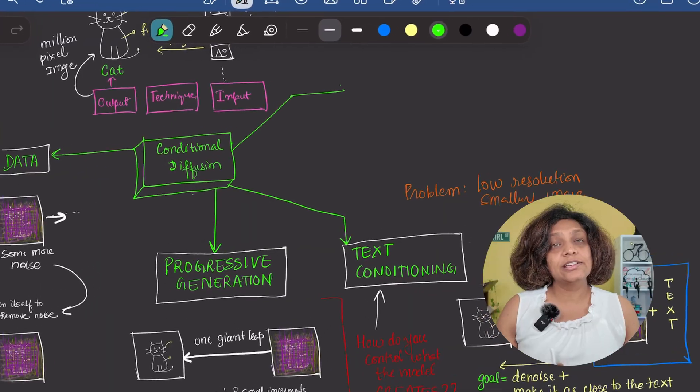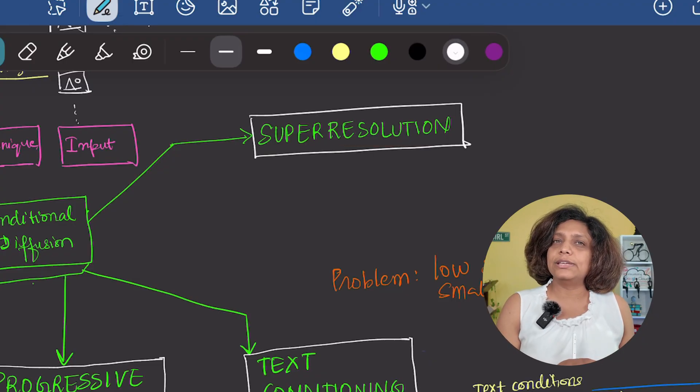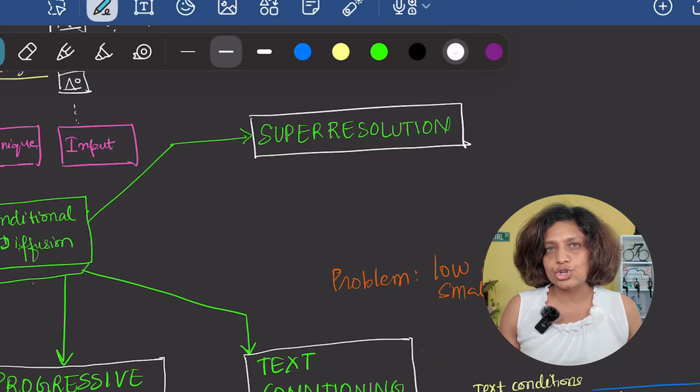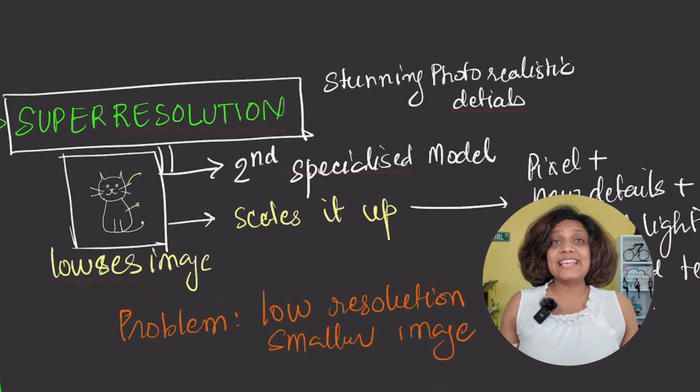We have our image. But to get those stunning photorealistic details, modern models use one final trick: super resolution. The process we just described often creates a smaller, low-resolution image because it's computationally easier.